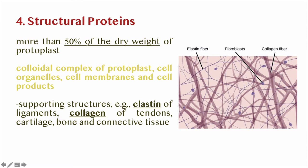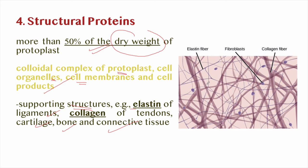Structural proteins: proteins constitute more than 50% of the dry weight of the protoplast. They form the colloidal complex of the protoplast, cell organelles, cell membranes, and cell products. Many proteins form supporting structures — for example, elastin of ligaments and collagen of tendons, cartilage, bone, and connective tissue. Elastin, collagen, and proteoglycans are the two fibrous proteins that form a major component of connective tissue.